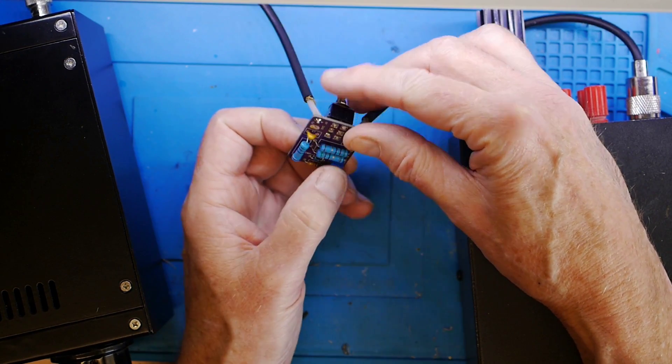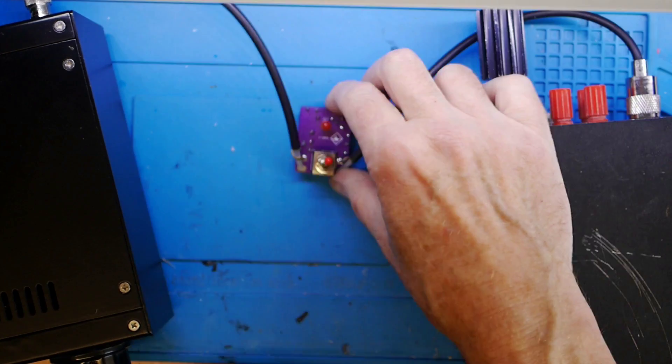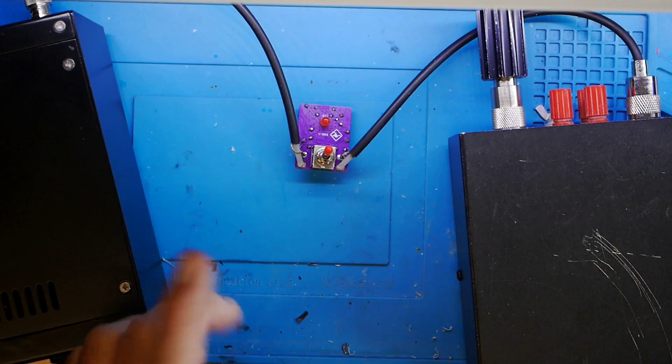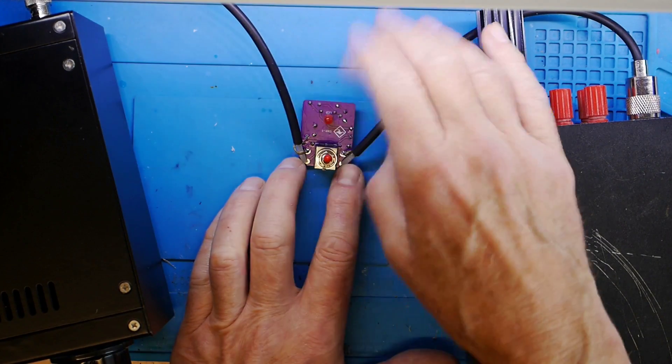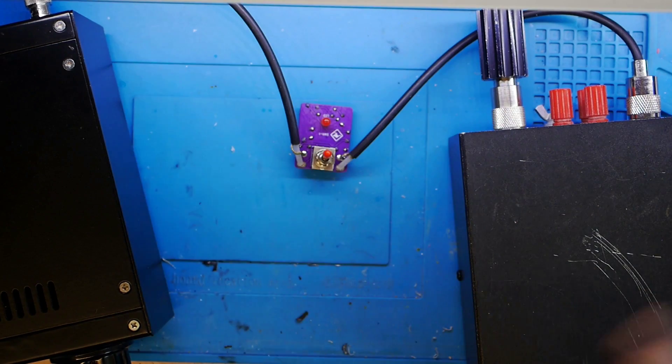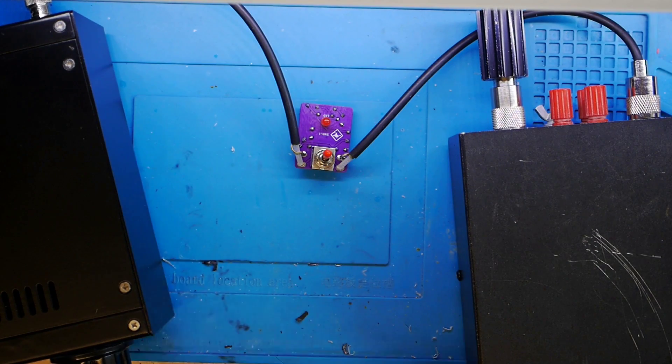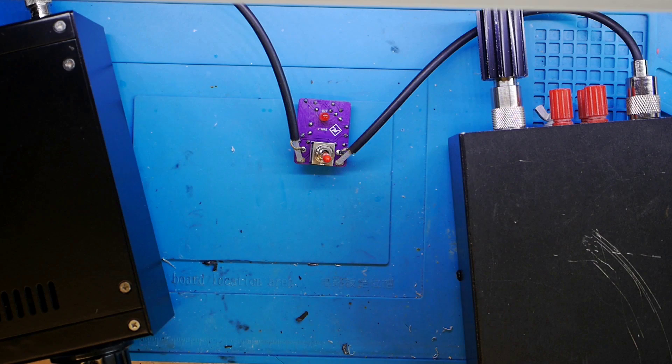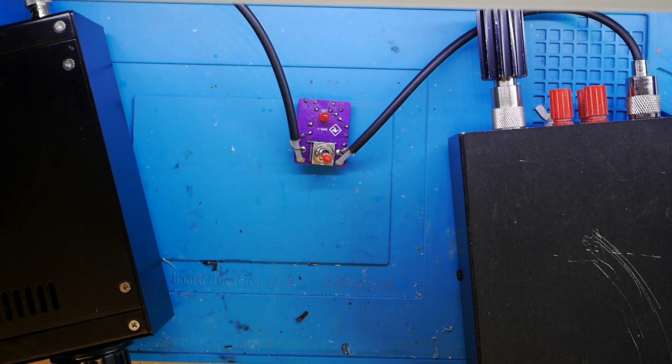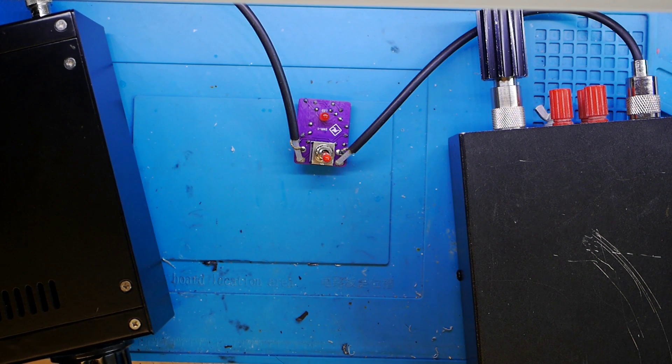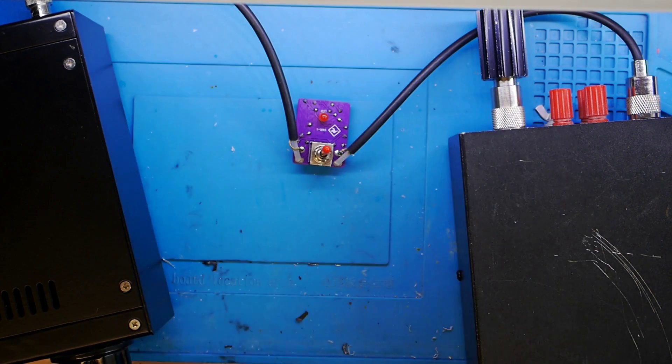So ordinarily in straight through mode, nothing happens here. However, when you want to use the bridge, you flick into, if you like, tuner mode. And so then if you key the mic, you can hopefully see the LEDs flashing.